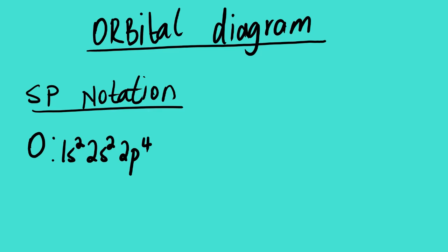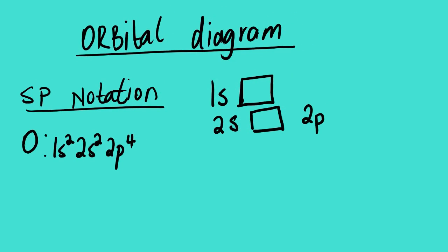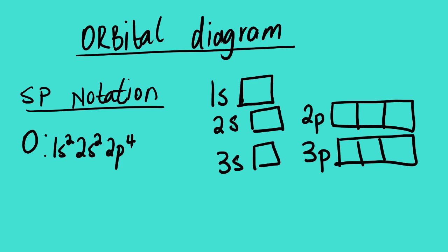Now, today's lesson video is how to write the electron configuration using the orbital diagram. What you need to know is that the 1s orbital has only one box. The 2s also has one box. The 2p orbital has three boxes. The same goes for 3s with one box, 3p with three boxes, and 3d has five boxes. These are orbitals using the boxes.